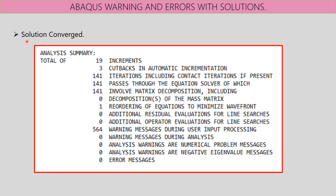As discussed in the previous video, there are mainly three portions in analysis. First, pre-processing: meshing the model, providing boundary conditions, selecting element type, material properties, and applying loading conditions. Then we run the simulations. If everything goes smoothly, the run will converge. If not, problems will occur — we need to identify them, go back to pre-processing, correct the issues, and relaunch.